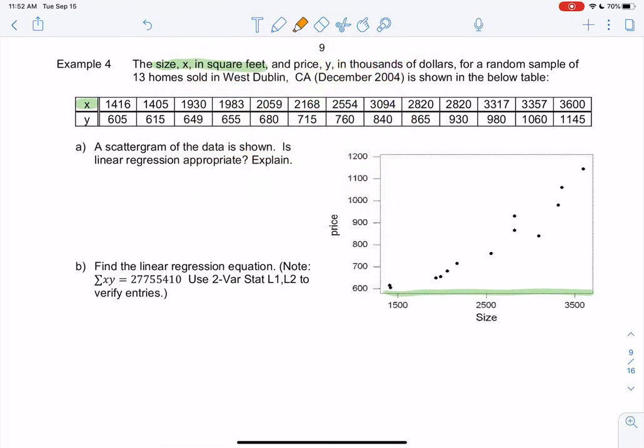So those are the square feet of a house, and then the price in thousands of dollars will be Y. So that'll be up and down. So that means like 605,000, right, is really 605,000. Sorry, 1,000, yeah. So 605,000, right? Not 605.